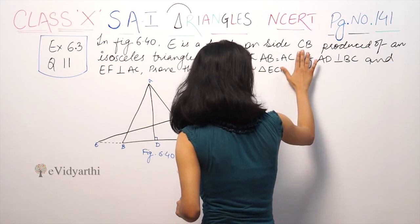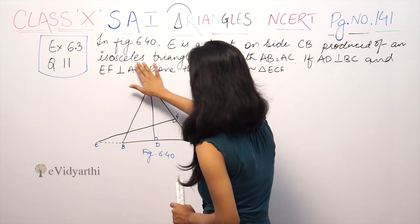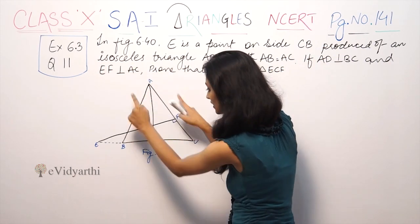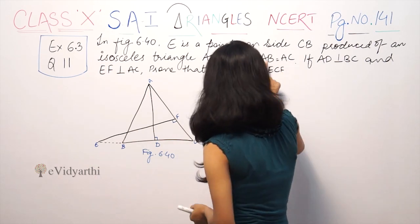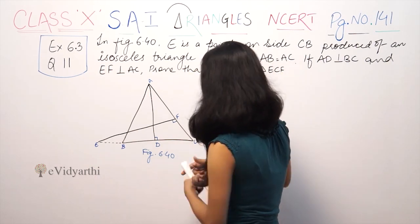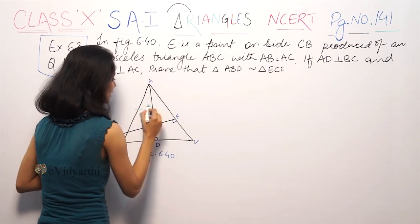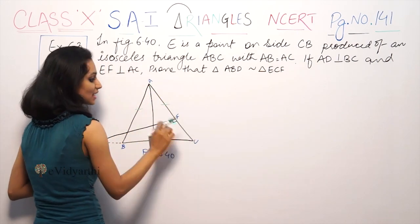This says E is a point on side CB produced of isosceles triangle ABC. We have triangle ABC. BC is produced to E. Now if ABC is an isosceles triangle, which means AB is equal to AC.